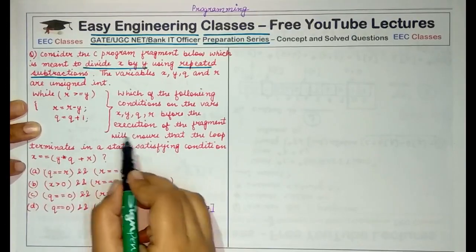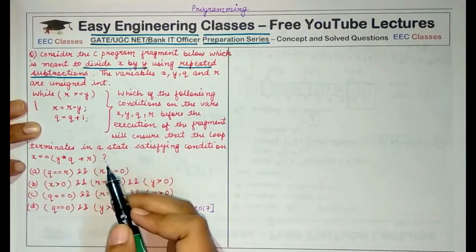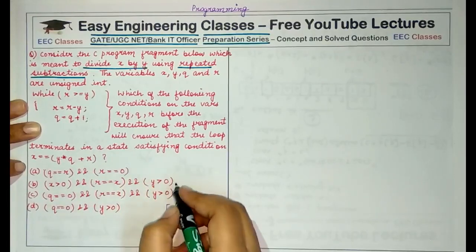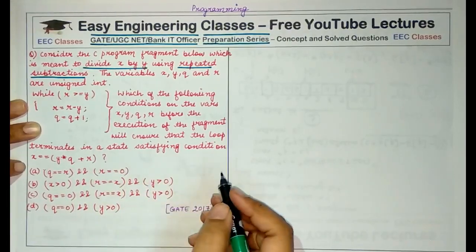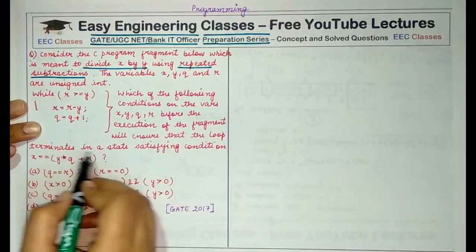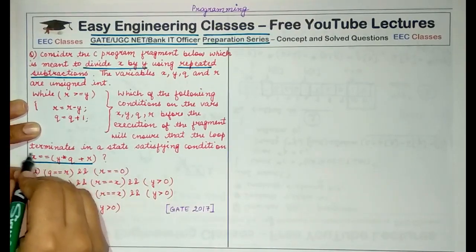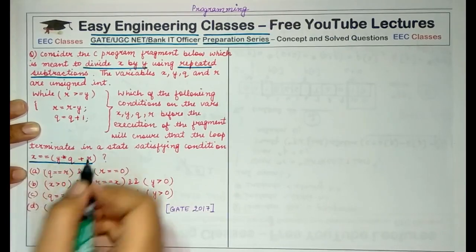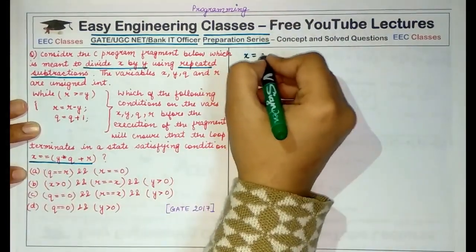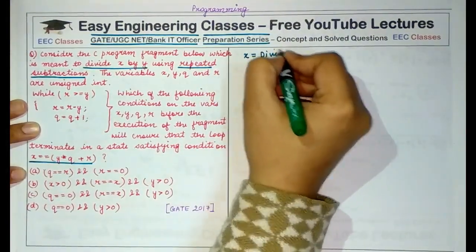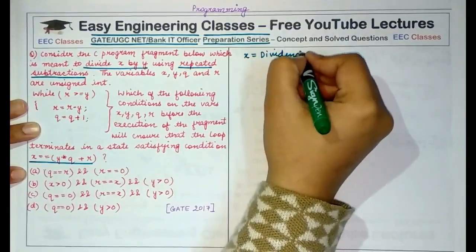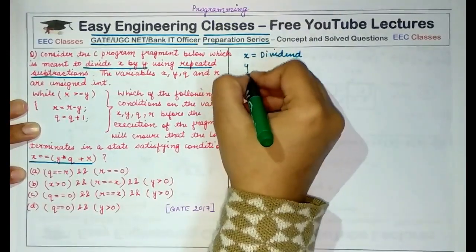What are the initial conditions that must be present to ensure that the loop when it terminates satisfies this given condition?